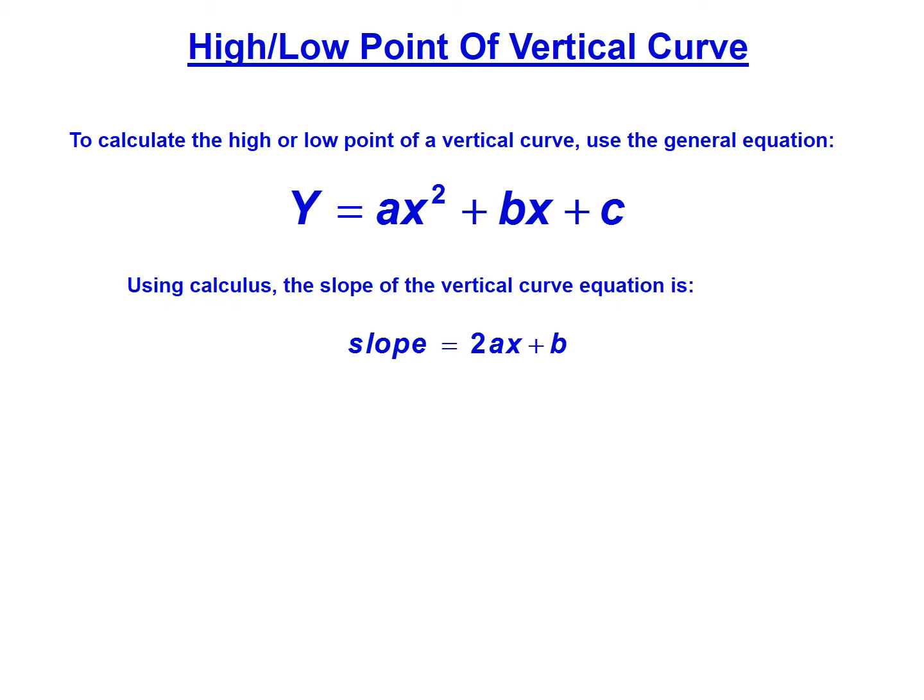Using basic calculus, we're going to take a derivative of that equation to find the slope. So the slope of the vertical curve is 2 times ax plus b.